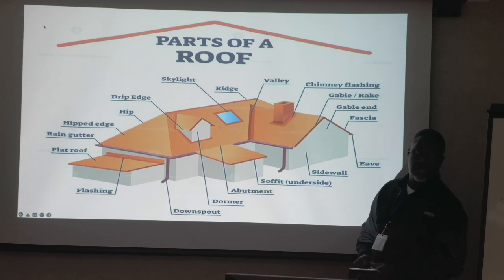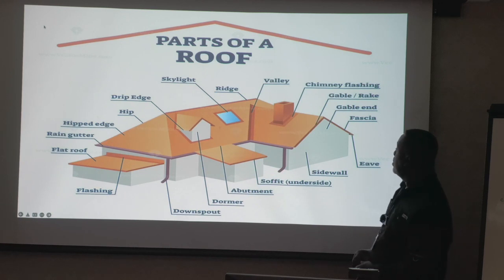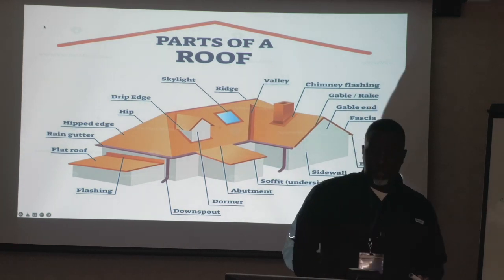And the abutment is the... Where two roofs meet. And the flashing is underneath it. That's correct. There's flashing underneath it. That's correct. Okay? We're going to talk more about fascia and soffits later.